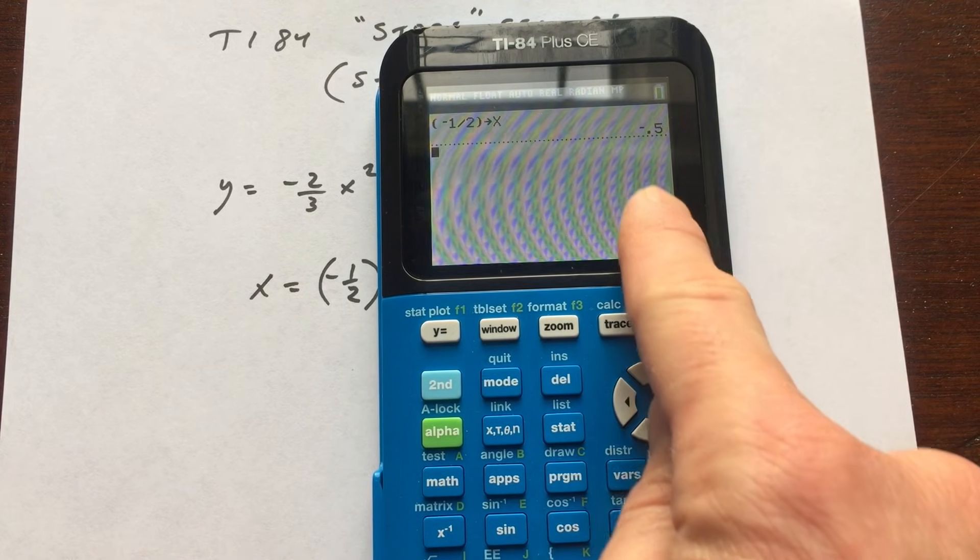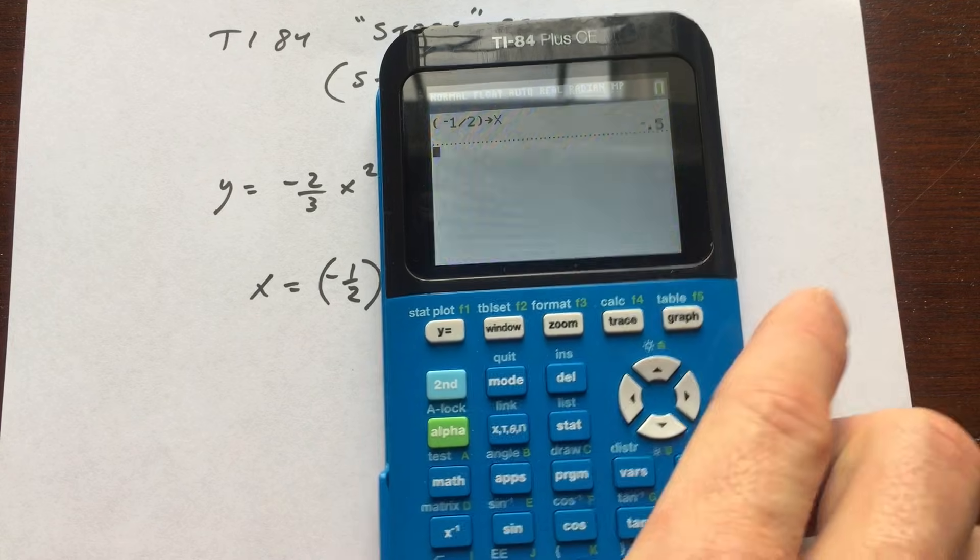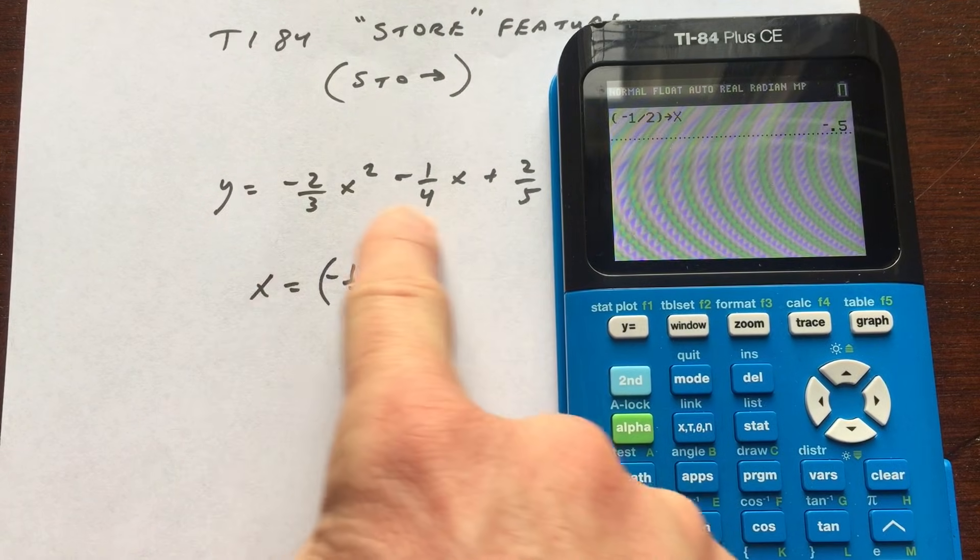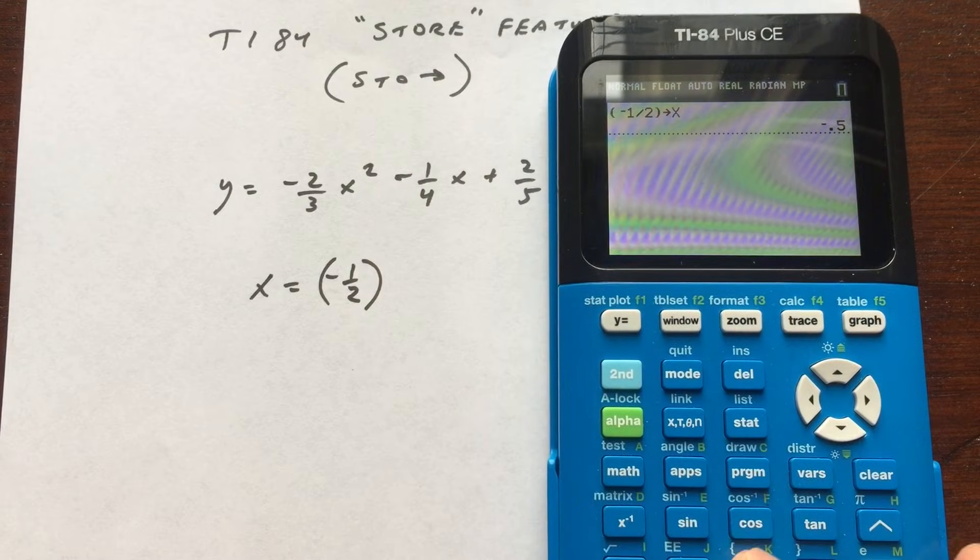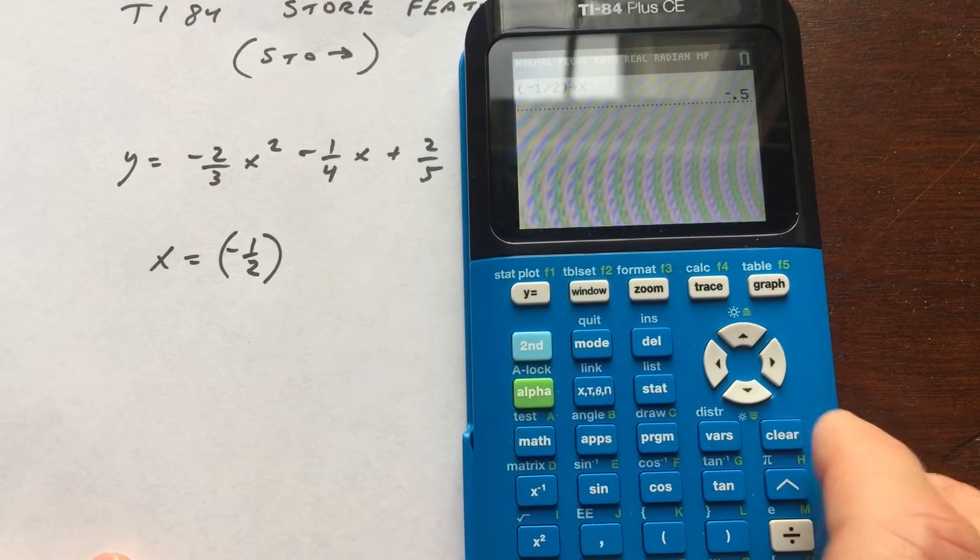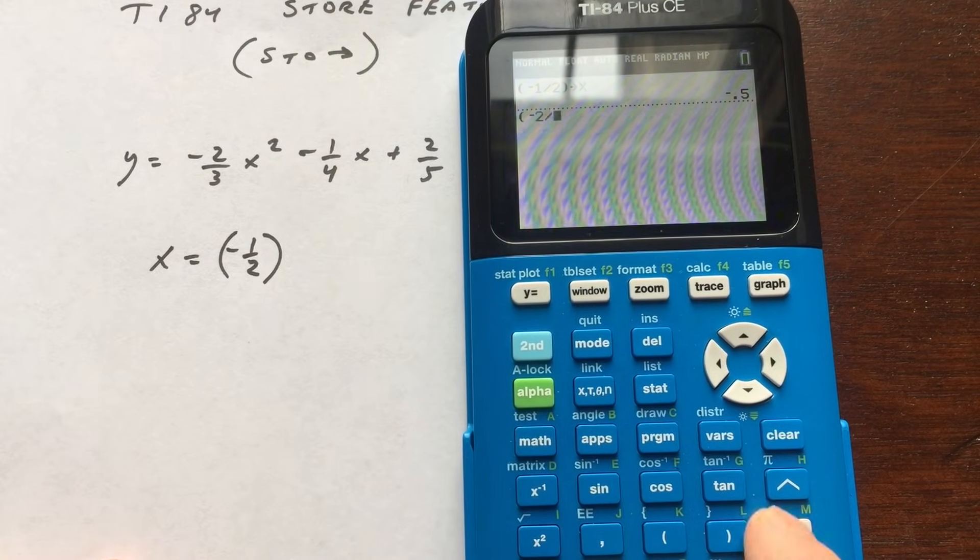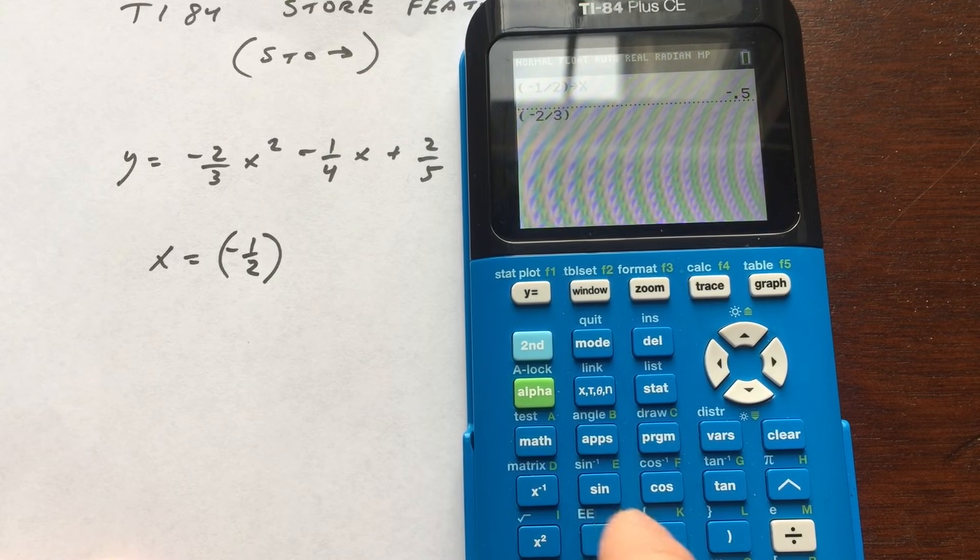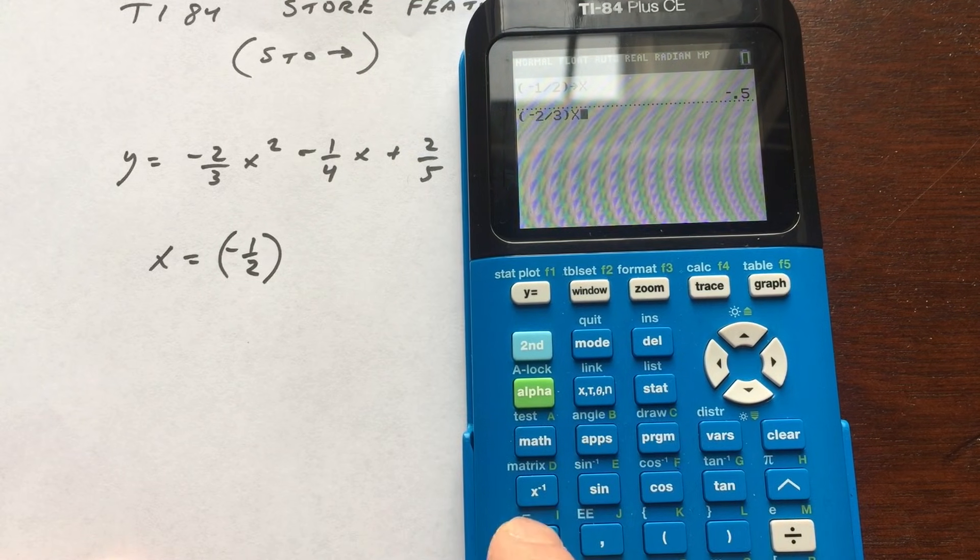So negative one-half, of course, is the same as negative 0.5. Now what I'm going to do is I'm going to go over here and I'm going to type in this equation. So I'm going to go ahead and type that in. So we've got negative two-thirds. Negative two-thirds. X squared. So I'm using my variable X. Squared.